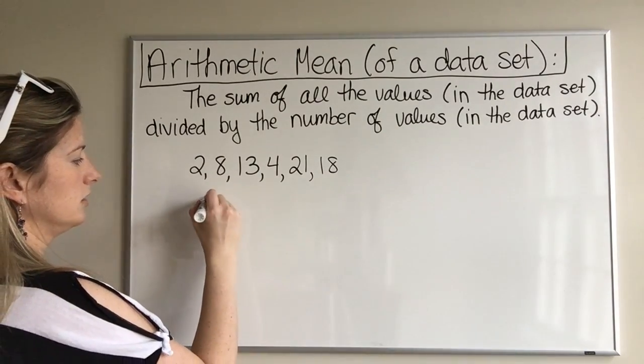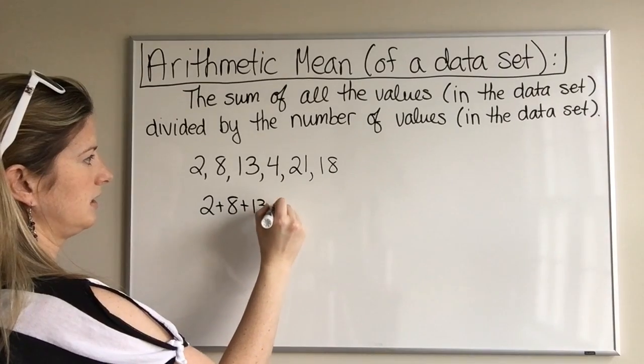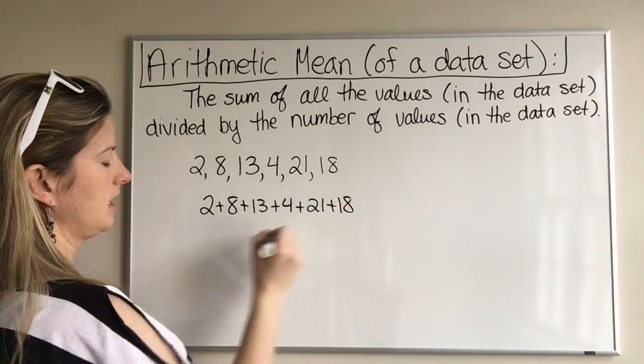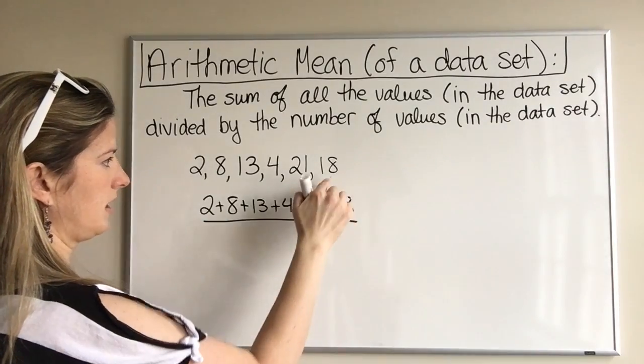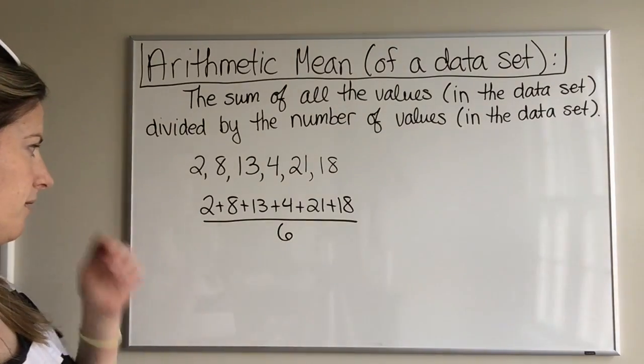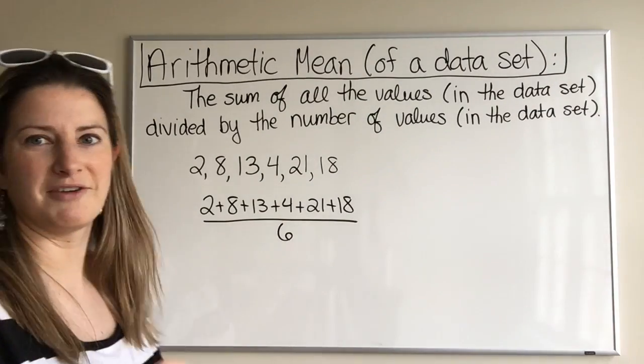So we're going to do 2 plus 8 plus 13 plus 4 plus 21 plus 18, and we are going to divide it by 1, 2, 3, 4, 5, 6. Six.